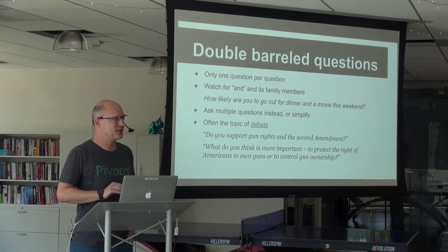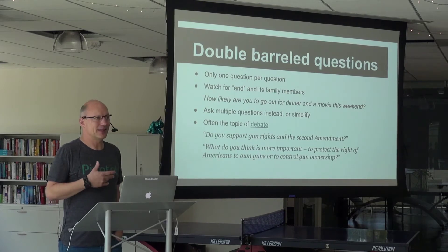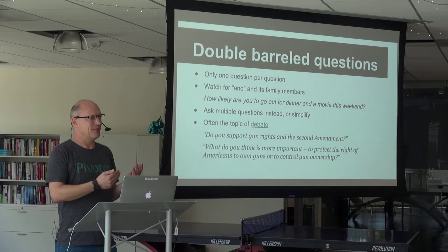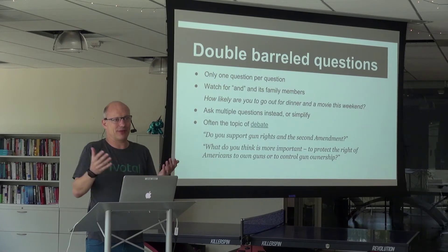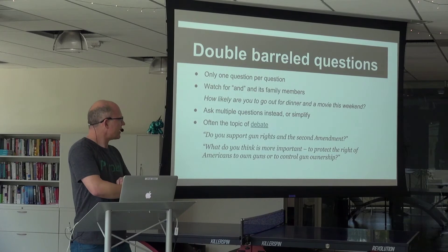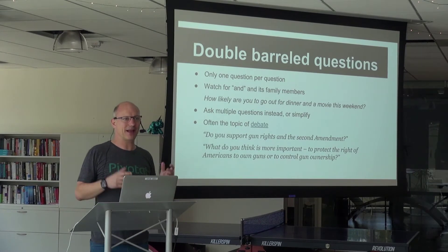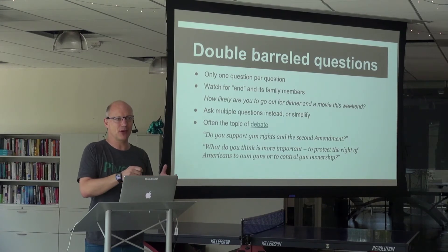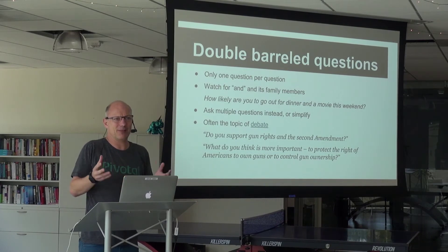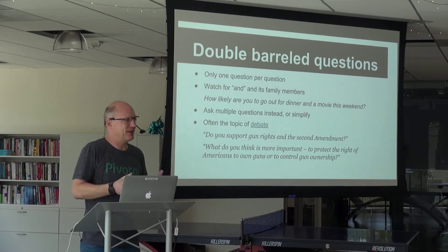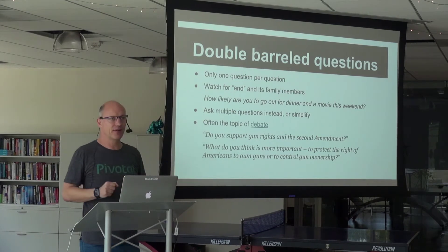Here's the so-called double-barreled question — 'Did you like the food and can I start the talk?' It's a question that is two questions in one. Maybe you weren't ready but you're ready for me to talk. Maybe you didn't like the food but you're ready for me to talk. What are you going to do? So look for words like 'and' and its family members. 'How likely are you to go out for dinner and a movie this weekend?' — maybe this weekend I'm going just for dinner. Ask multiple questions instead, or simplify.